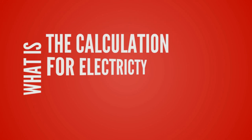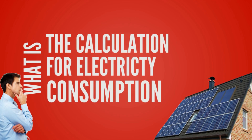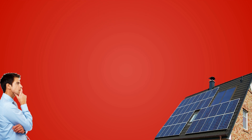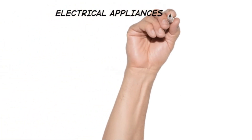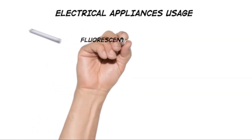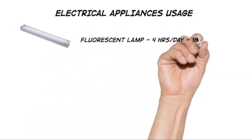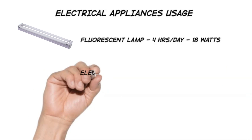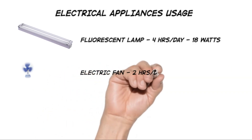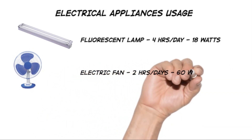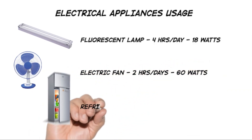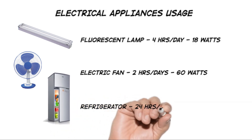What is the calculation to determine the consumption of electricity based on your appliances at home? The power consumption demands will go through the power consumption. Let's say: a fluorescent lamp at 18 watts using 4 hours a day, an electric fan at 60 watts using 2 hours a day, and a refrigerator at 75 watts using 24 hours a day.